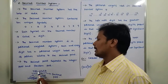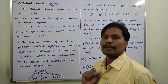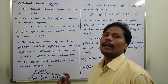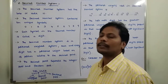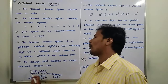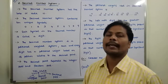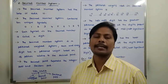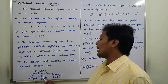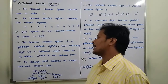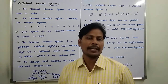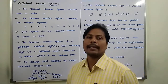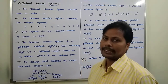This point is called the decimal point. The decimal point separates the integer part and the fraction part. Before the decimal point, this is called the integer part. After the decimal point, this part is called the fractional part. So the decimal point separates the integer part and the fraction part, and each digit is called a decimal digit.